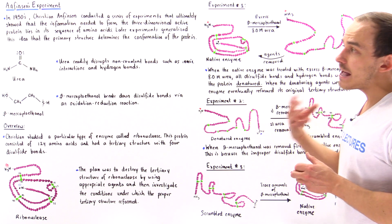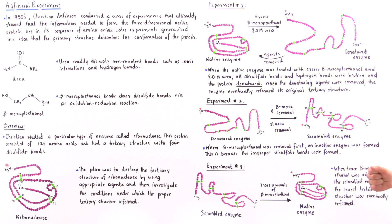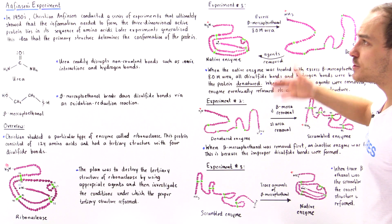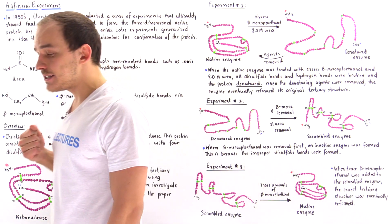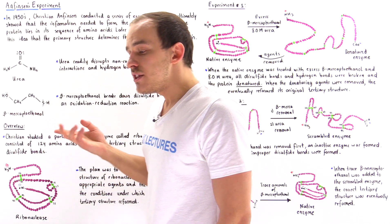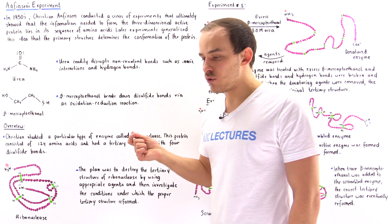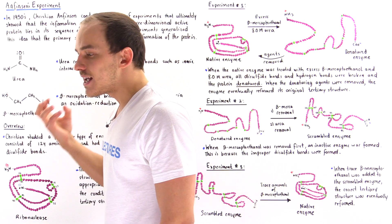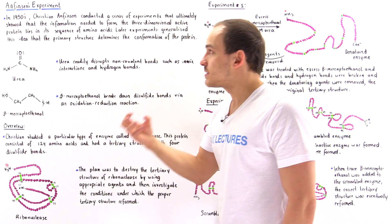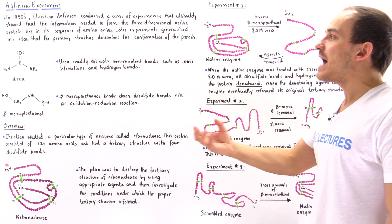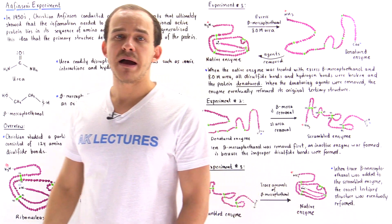After about 10 hours, the native structure did in fact reform. These were the experiments conducted by Christian Anfinsen in the 1950s that demonstrated it is the primary structure — that specific sequence of amino acids — that provides the information needed to form the final three-dimensional structure of a polypeptide.